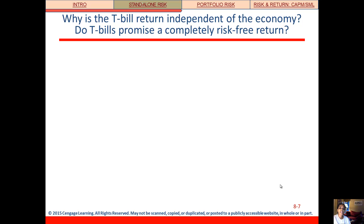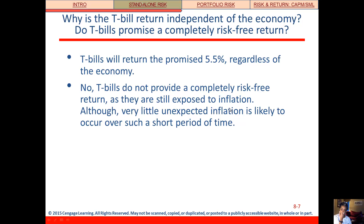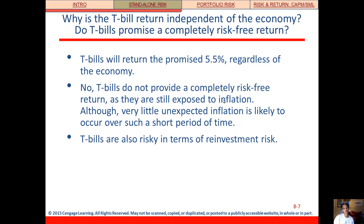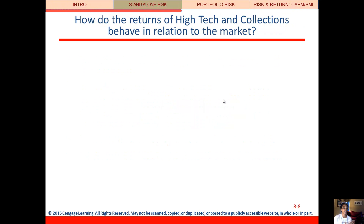Why is the T-bill return independent of the economy? And do T-bills promise a completely risk-free return? The T-bill return is independent of the economy because it's considered to be a risk-free security, promising a 5.5% yield regardless of what happens. They don't provide a completely risk-free return because they're still exposed to inflation risk and reinvestment risk. But we consider T-bills risk-free because there's no default — it's backed by the full faith and credit of the US government and it's short-term.